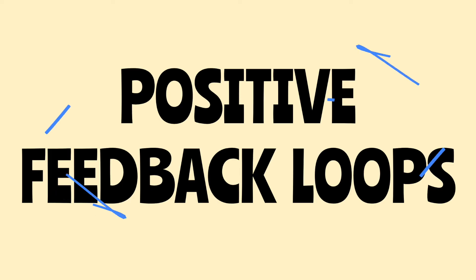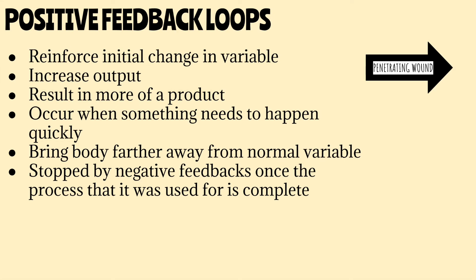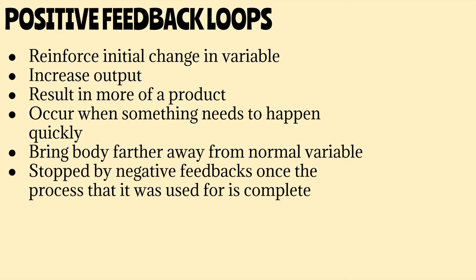Now let's talk about positive feedback loops. Remember we said that negative feedback loops bring the body back to its normal homeostatic range by resisting or going against the change in variable. But positive feedback loops work differently — they bring the body back to its normal homeostatic range by supporting or reinforcing the change in variable. For example, if the change in variable is to the right, positive feedback loops will travel in that same direction, to the right. Positive feedback travels in the direction of the change to bring the body back to its normal range. Positive feedback increases output, results in more of a product, and occurs when something needs to happen quickly.